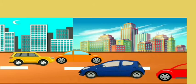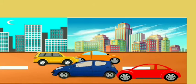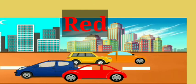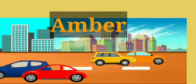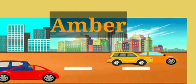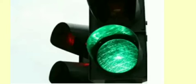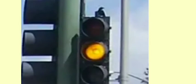First of all, let me tell you that there are three colors on the traffic signal. They are red, amber or what you call yellow, and green. Red light tells the driver to stop. Green light means that the driver can start driving or keep driving. Amber or yellow indicates to stop when it is safe to, because the light is about to turn red.